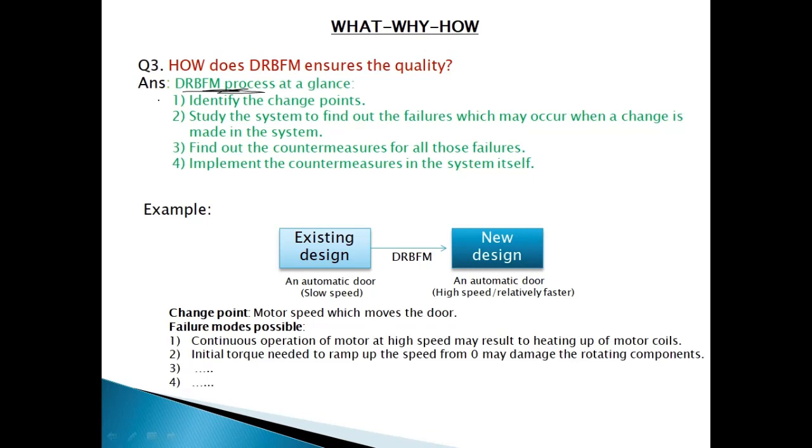In DRBFM, the first step is to identify the change points. That is, what are exactly the change points that has to be implemented in the system. The second step is to study these change points and find out where the impact can occur because of these change points in the overall system. And for every effect, there has to be one countermeasure that can absorb all the defects or all the change related implications that can occur in the system. And finally, these countermeasures are implemented as a logic in the system.